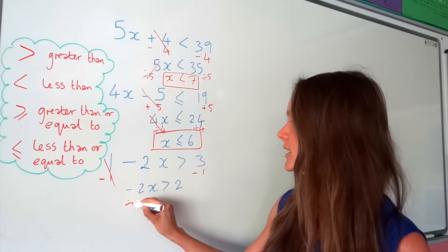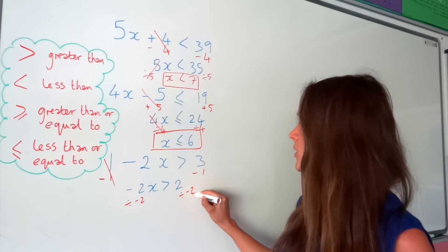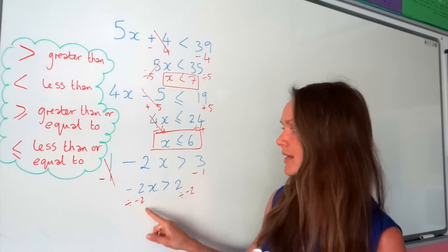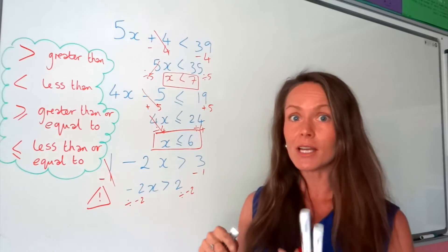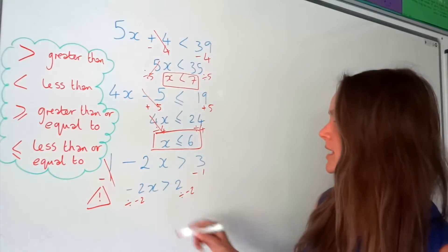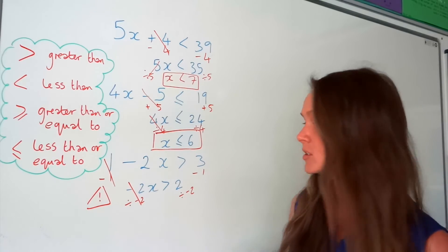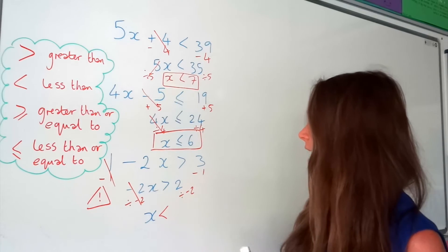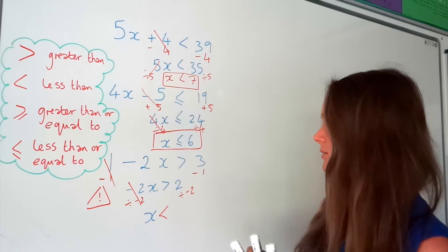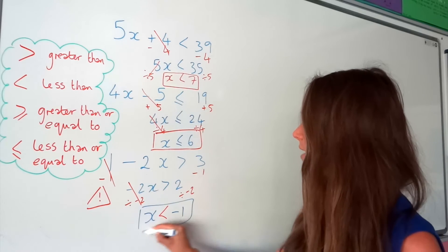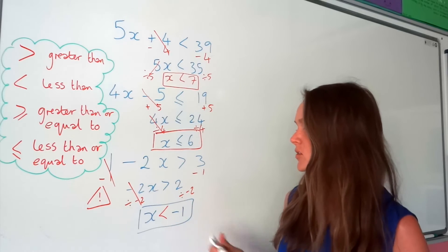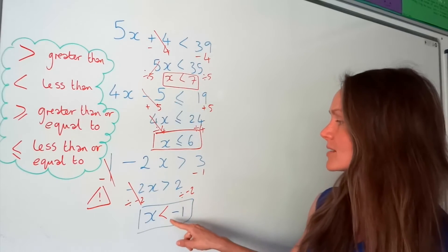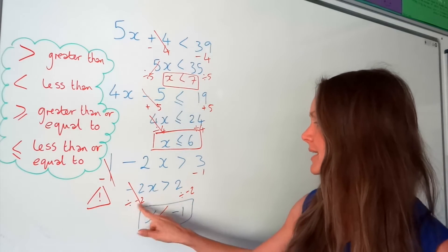Now, this is what I was talking about earlier — we need to divide by negative 2. Whenever you find yourself multiplying or dividing by a negative number, you need to flip that sign round the other way. Minus 2 divided by minus 2 is 1, so we're left with 1x. The symbol turns around, and 2 divided by minus 2 is minus 1. So x is less than negative 1 — it could be minus 2, minus 3, minus 4, etc. That's an example of when the sign switches.